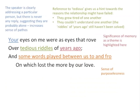In the second stanza, the speaker addresses a 'you': 'Your eyes on me were as eyes that rove.' The speaker is talking to a particular person, yet there is never any reply in this poem, suggesting they are probably alone — which increases the sense of pathos. The reference to 'tedious riddles of years ago' gives a clue as to why the relationship failed: they may have grown tired of one another, or couldn't understand each other. The words 'years ago' also bring up the significance of memory as a theme throughout the poem.